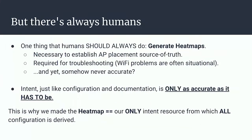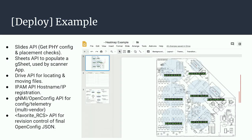There are always humans. If we're going to automate everything, what should we not automate? The design was clear: you wouldn't automate the design itself. We're always going to have humans generating heat maps, figuring out where APs need to be placed — dots on a floor plan, channel, transmit power, typical wireless LAN design stuff. So we treat the heat map as the one true authoritative source for everything. We use Google Slides because we needed something to put a floor plan on, add dots, and label the RF layer stuff like channel and transmit power — and Slides has an API we could feed back into.